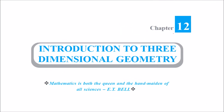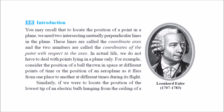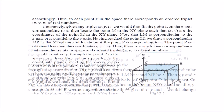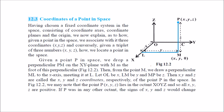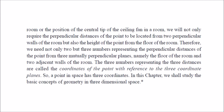This is Class 11, Chapter 12: Introduction to Three-Dimensional Geometry. We have already studied point representation with respect to two axes, x and y, called Cartesian coordinates. But if you throw a ball, it moves in three directions: x, y, and z. More simply, if you are in a room, you have walls, a roof, and a floor — you are in a 3D space. Your eyes allow you to perceive height, so we will be talking about three dimensions today.